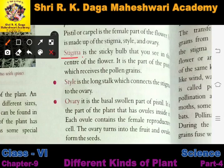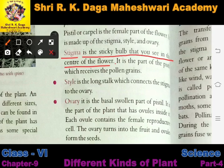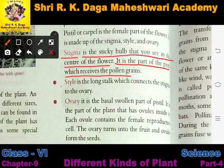Stigma is the sticky bulb that you see in the center of the flower. At the center of the flower there is a bulb-like structure called the stigma, as shown in the picture. It is the part of the pistil which receives the pollen grains — pollen grains come and strike upon it.